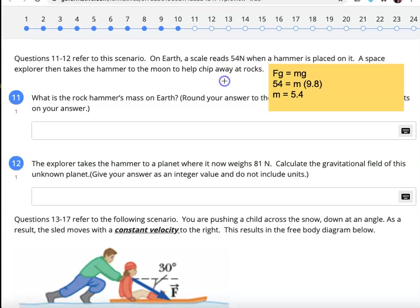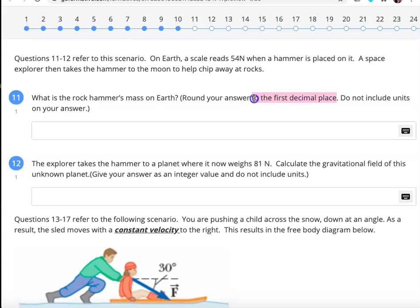On Earth, the scale reads 54 newtons. And on Earth, G is 9.8. Dividing both sides, M is approximately 5.4. Now let's see what we have for options here. It says round your answer to the first decimal place. Do not include units on your answer. So if I put in 5.4, that's to the first decimal place. That's no units. If you put 5.5 because you did 9.8 for gravity, that also works.